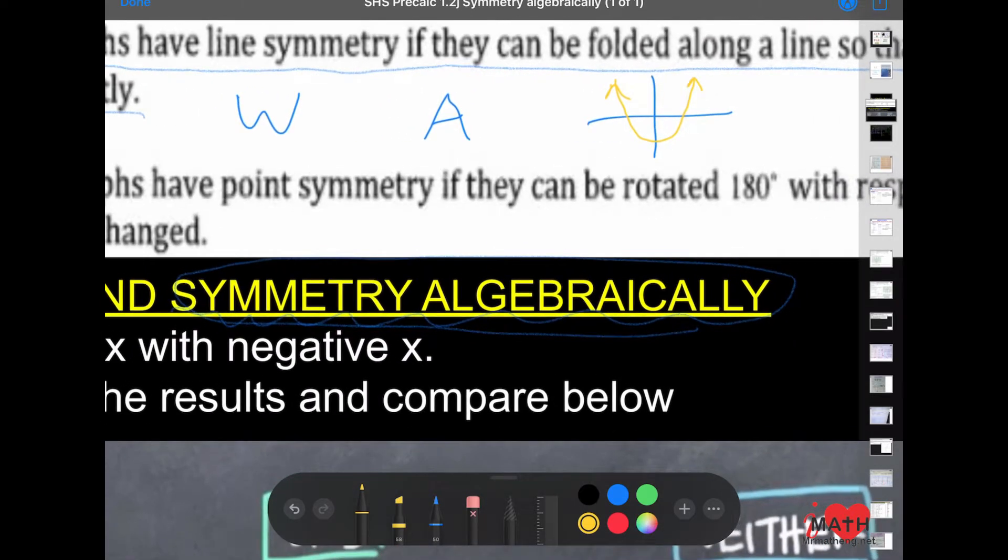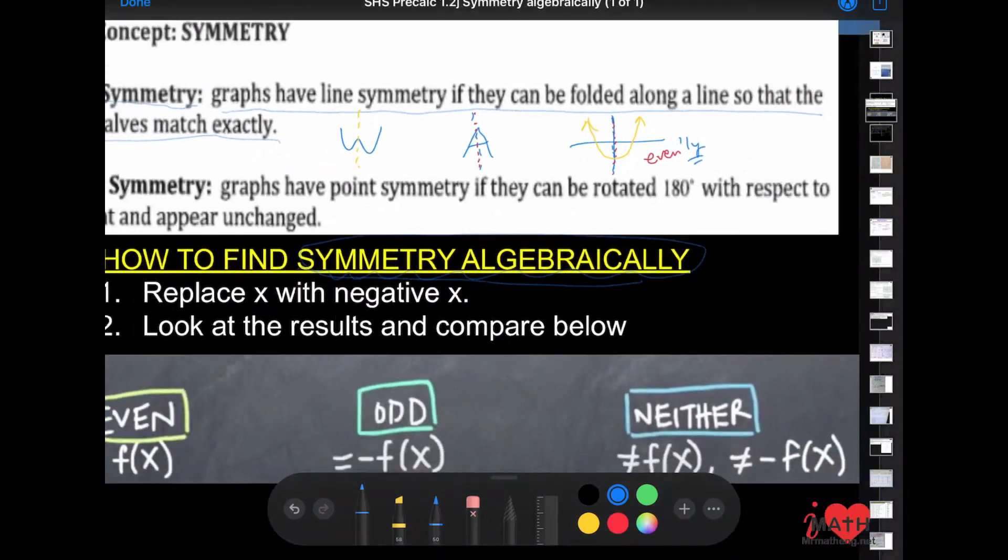We've been focusing more on line symmetry about the y-axis. These are three examples of where the graphs have what I call evenly symmetry. That 'ly' is kind of to show that it's symmetrical about the y-axis.